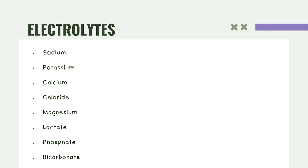These are the different electrolytes that will be discussed one by one. There are many electrolytes in the body, but we will discuss those which are clinically significant: sodium, potassium, calcium, chloride, magnesium, lactate, phosphate, and lastly bicarbonate.